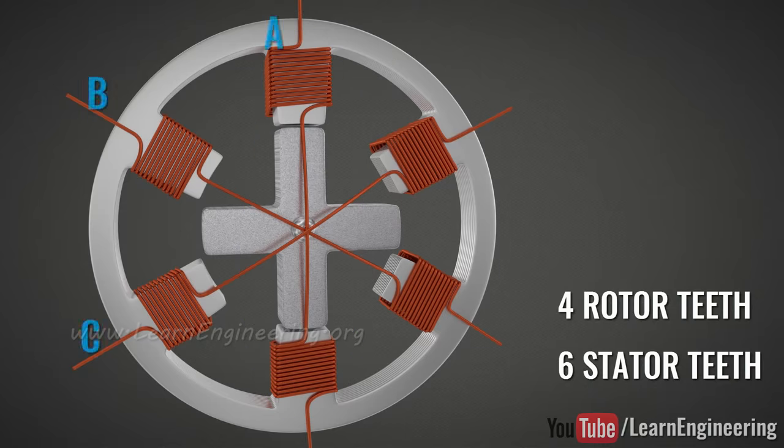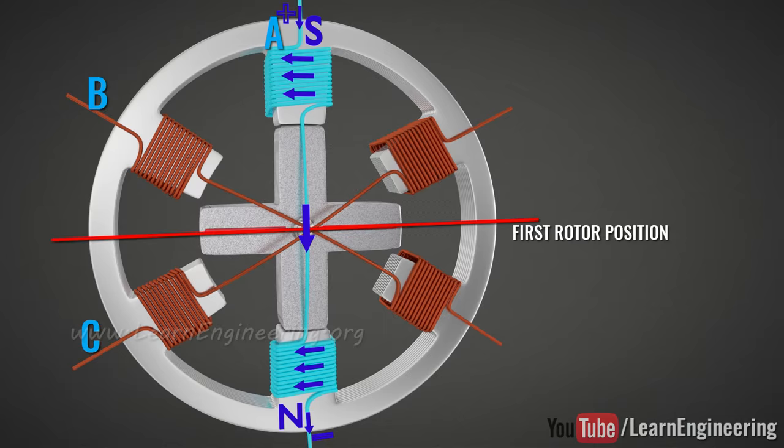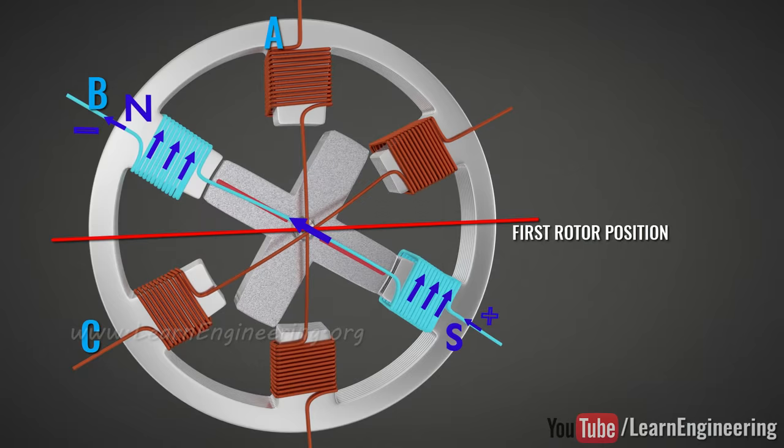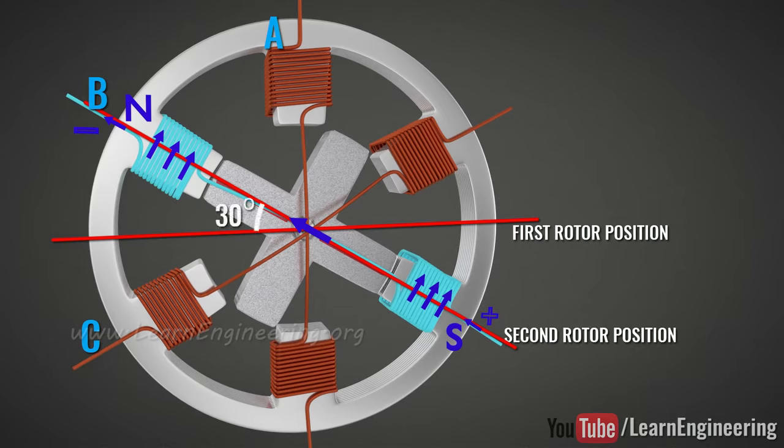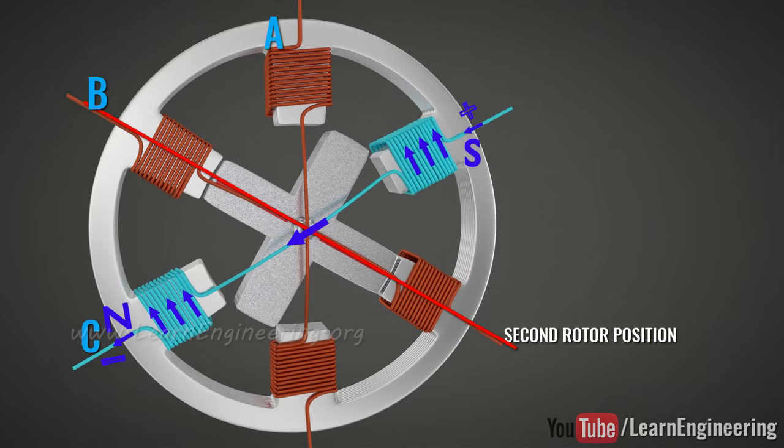You can explain how this stepper motor works by yourself. If you de-energize coil A and energize B, it becomes clear that the rotor will rotate, as shown. From the geometry, it is clear that the one step size is 30 degrees. To get the next step, de-energize coil B and energize C.